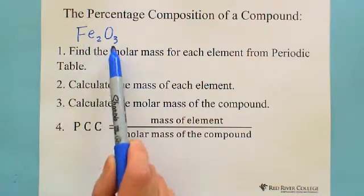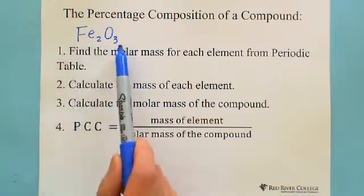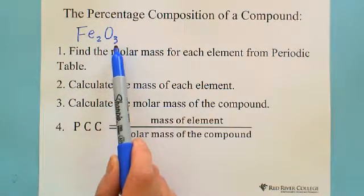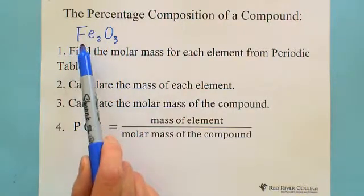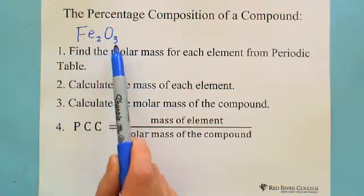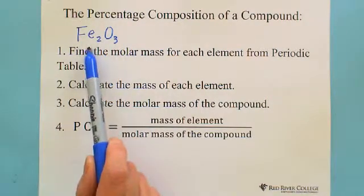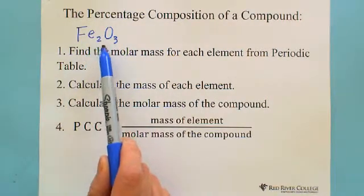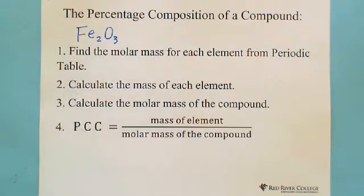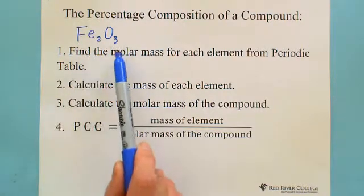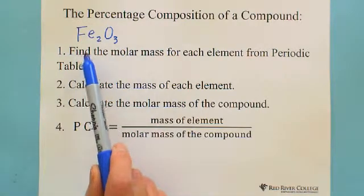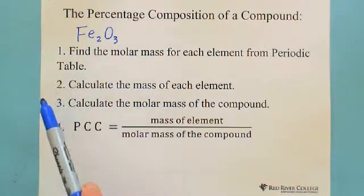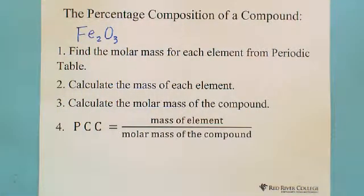They make iron oxide, which is one mole. So in one mole of iron(III) oxide, there are two moles of iron and three moles of oxygen. Because they have different molar masses and different masses, that's why we are looking for the percentage of each element in the total compound.